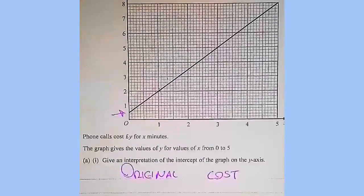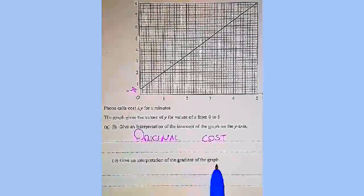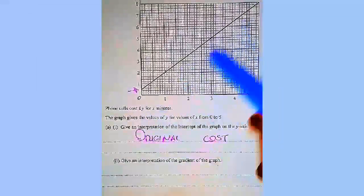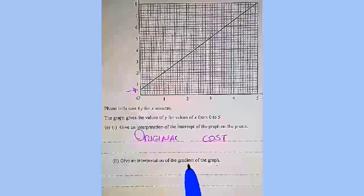Given interpretation of the gradient of the graph, now this is a new bit. Essentially it's exactly the same as your scatter graphs, the same as your relationship.